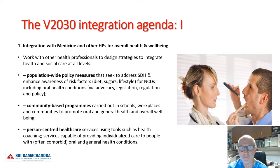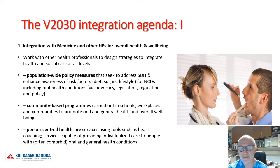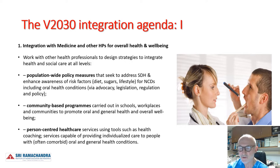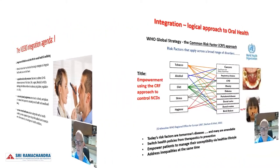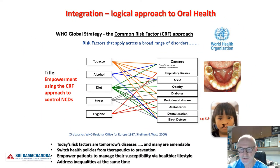Integration with medicine for the improvement of overall health and well-being through holistic care should be looked at on three levels: population-wide policy measures addressing aspects of lifestyle and poverty; community-based programs carried out in schools, workplaces, and the community; and individual-level person-centered healthcare. This shows how logical it is to switch attention from the treatment of diseases to the risk factors.